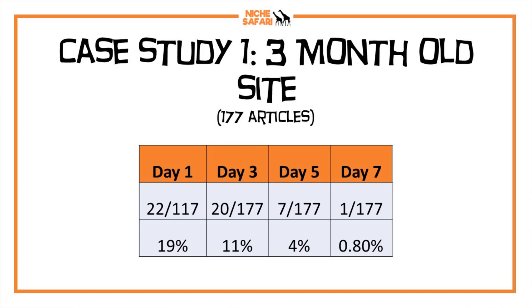Usually when I manually index 10 articles per day, about seven or eight of them will stick and one or two won't, requiring another attempt. Over time the percentages improve. On day one, 22 out of 177 articles were not in the index — about 19%. By day three I got that down to 11%. By day five it dropped to four percent, and by day seven only one out of 177 articles was not in the index. That one remaining article appears to be a cannibalization issue where Google already has a similar article indexed.